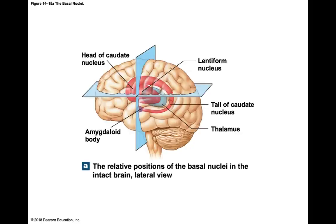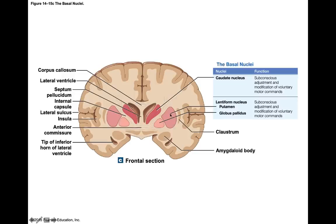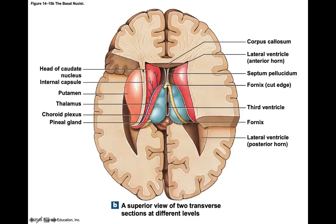There are different nuclei of the basal nuclei. The caudate nucleus is the large curving tail. The lentiform nucleus consists of two structures: a lateral putamen and a medial globus pallidus. Both form the lentiform nucleus. The internal capsule fibers pass right through the lentiform nucleus, making it appear striped.